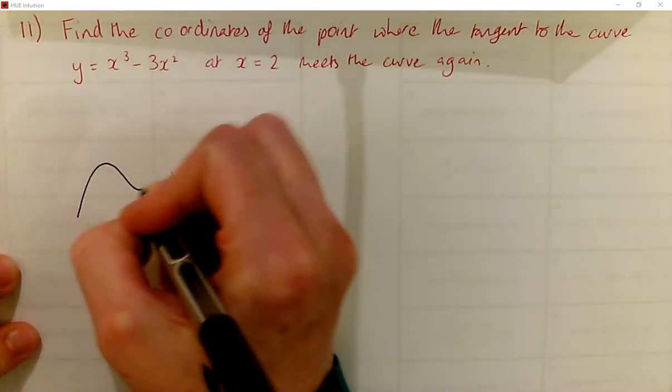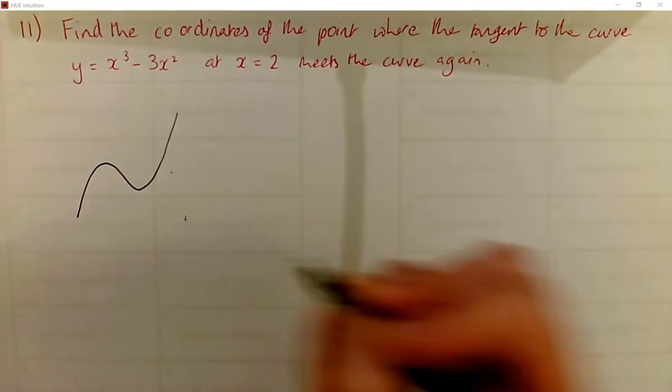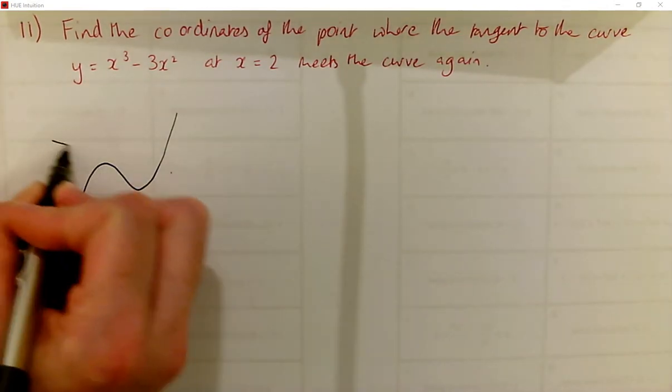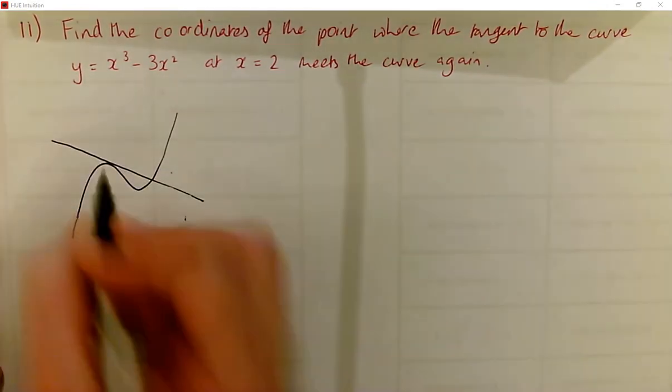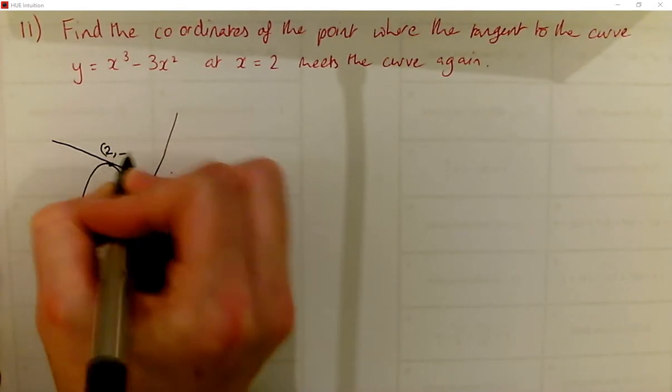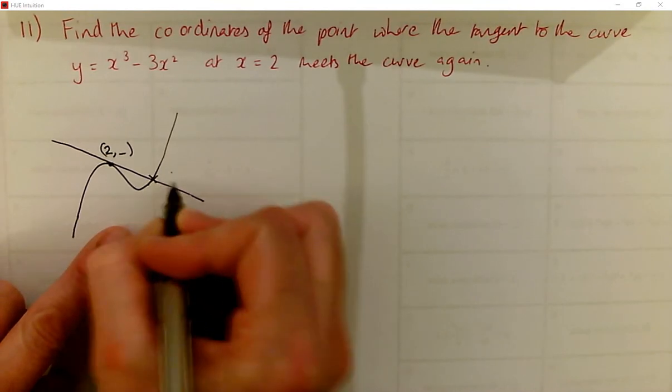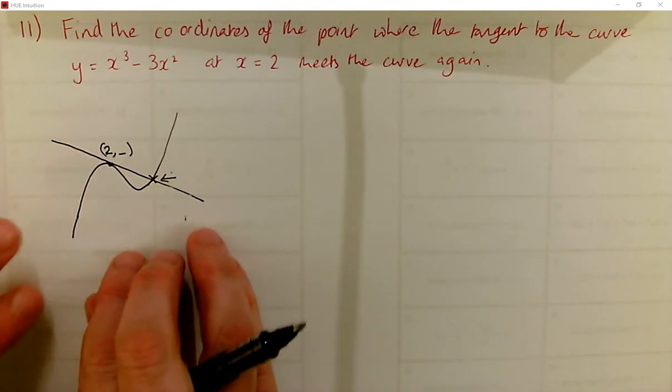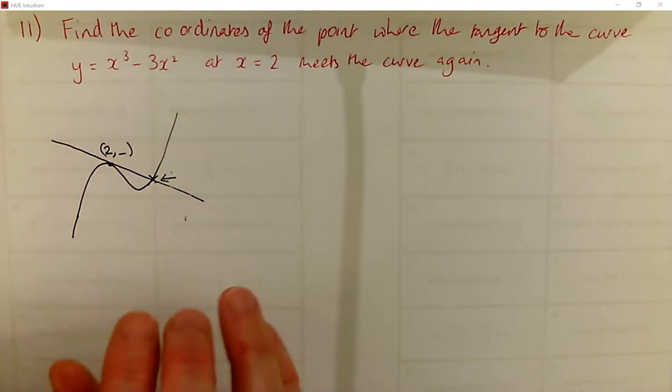So we have a cubic, we have a tangent. I have no idea exactly where the tangent is. Let's just imagine it's here. So the tangent at this point, we don't know the y-coordinate, where it meets the curve again. So we want to find the coordinates where it meets the curve again. That's just a rough sketch to get some idea of what the question is on about.